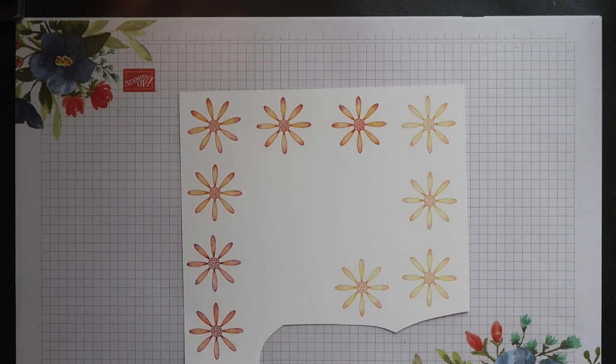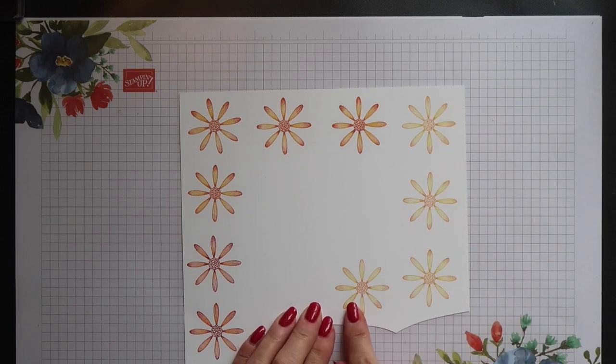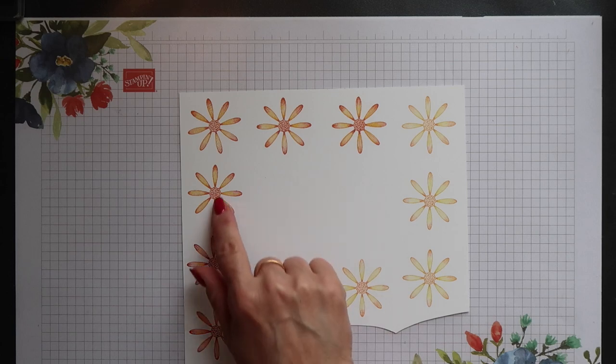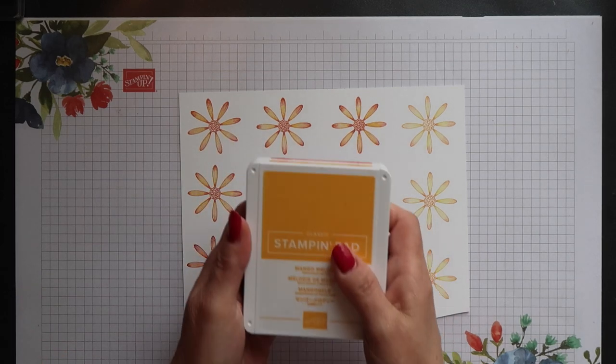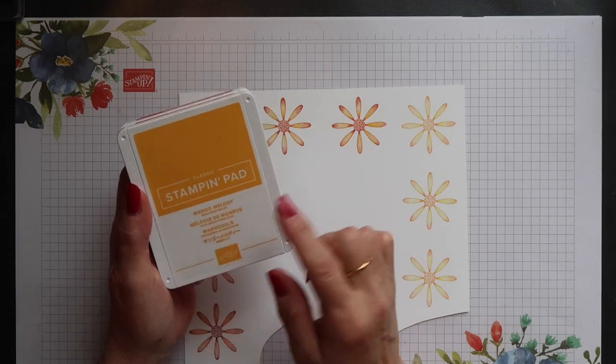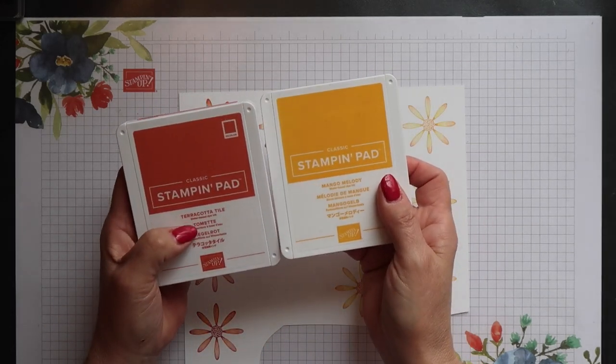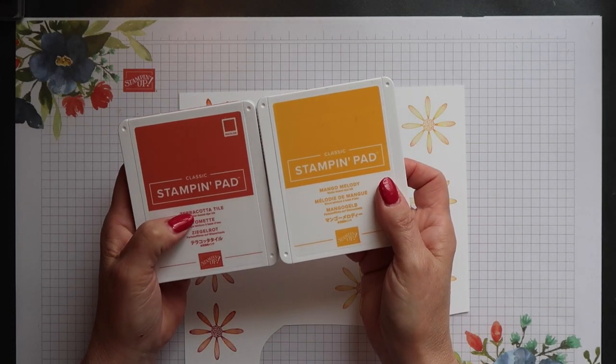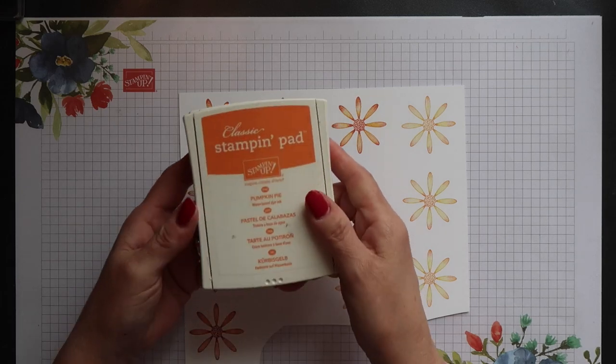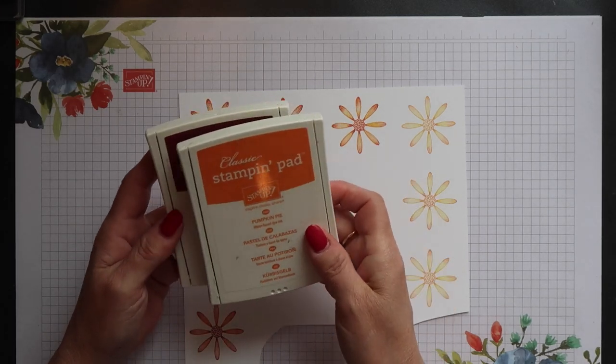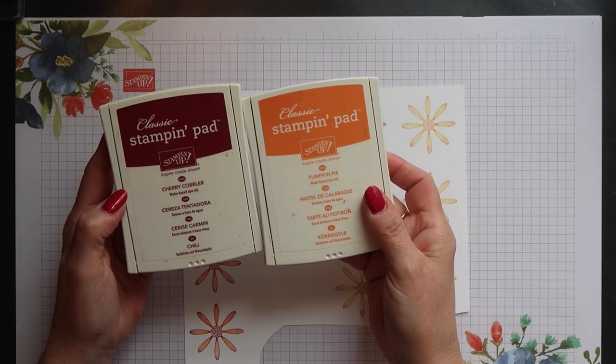You can see the lovely effect this gives you. I've stamped three different sets of daisies on this sheet, four with the Daffodil Delight and Pumpkin Pie, then another four with Mango Melody and Terracotta Tile for the second tone. Lastly I have two additional daisies created using Pumpkin Pie as the base layer, and then my second tone is Cherry Cobbler.